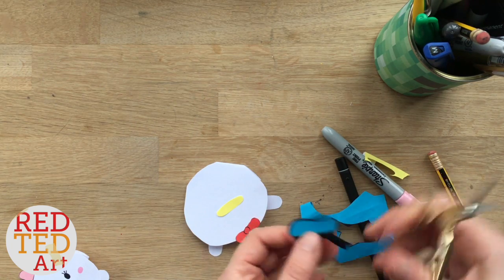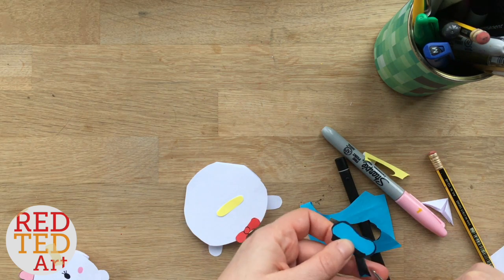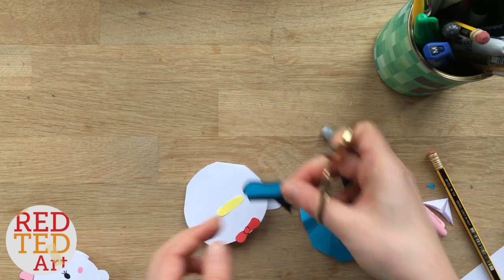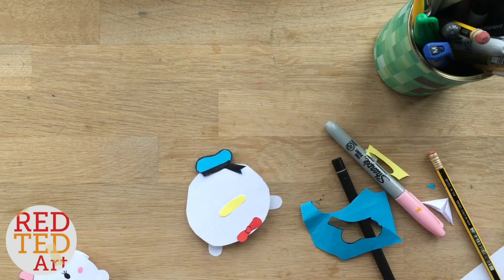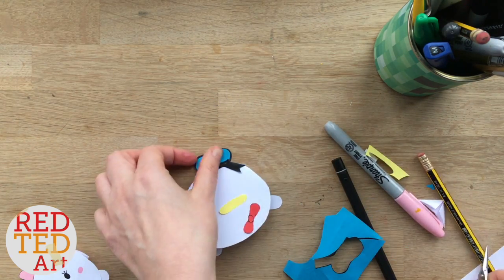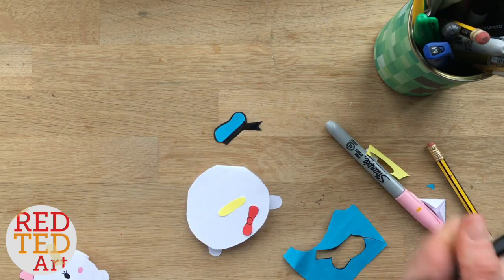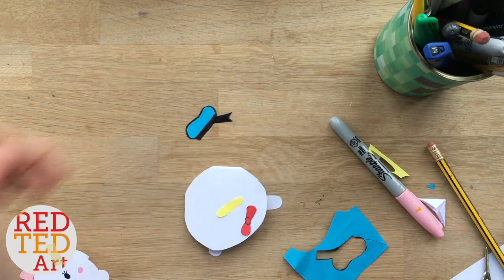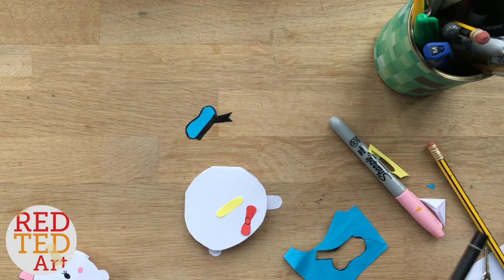There we go. Almost done. Oh, I think that's so cute. I'm really happy with that. I just needed to add a tiny bit of black here so I can see a bit of the blue peeping through. Let's glue it all together and then we'll add the eyes.